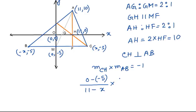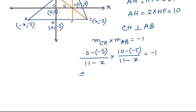Slope of AB is going to be 10 minus (-5) divided by 11 minus (-x). Setting up the perpendicularity equation gives us the calculation.